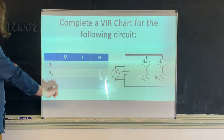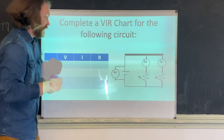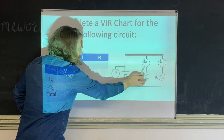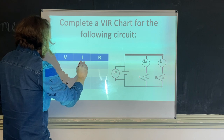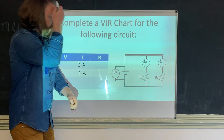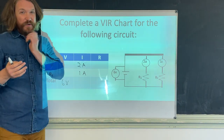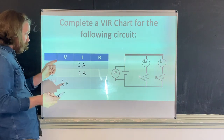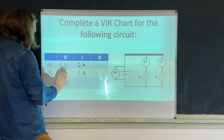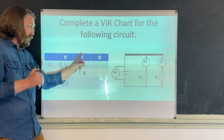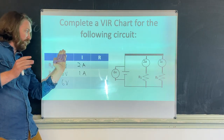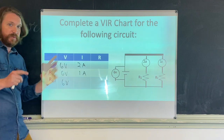Now a slightly different example. Total voltage is 6 volts. Current going into R1 is 2 amps, and current going into R2 is 1 amp. We need to find everything else. The voltages are the same everywhere in parallel — 6 volts at R1 and 6 volts at R2. In a series circuit, current is constant; in a parallel circuit, voltage is constant.